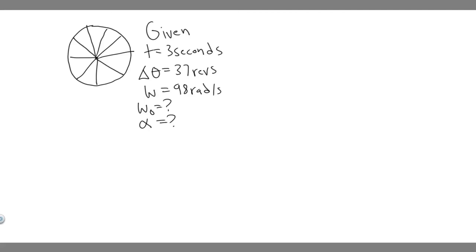In this problem, we're told a rotating wheel requires 3 seconds to rotate 37 revolutions. Its angular velocity at the end of the 3-second interval is 98 radians per second. What is the constant angular acceleration in radians per second squared of the wheel?